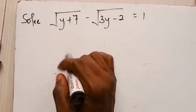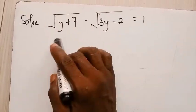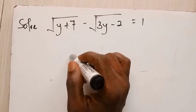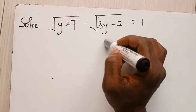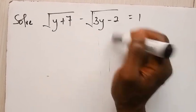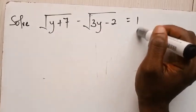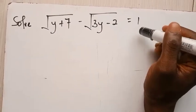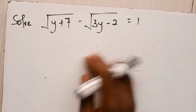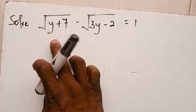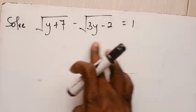You want to solve the equation: root of (y plus 7) minus root of (3y minus 2), everything equal to 2. Solving this means you should find the values of y.